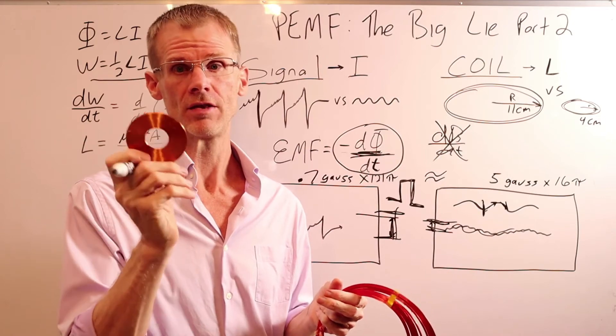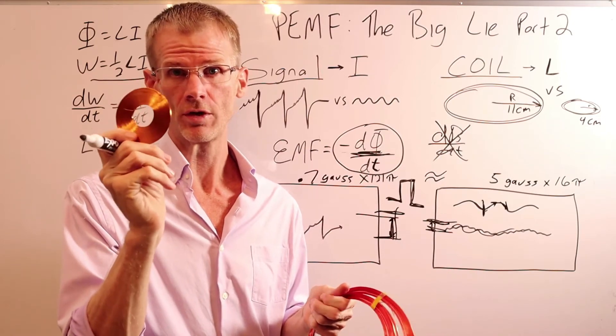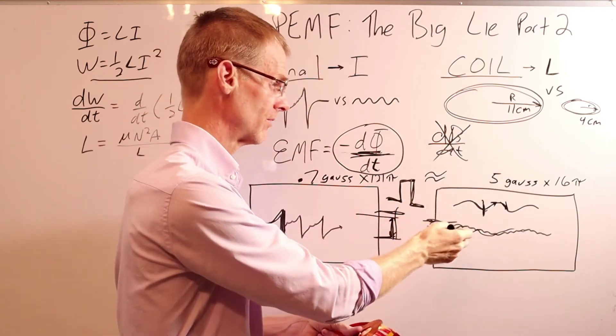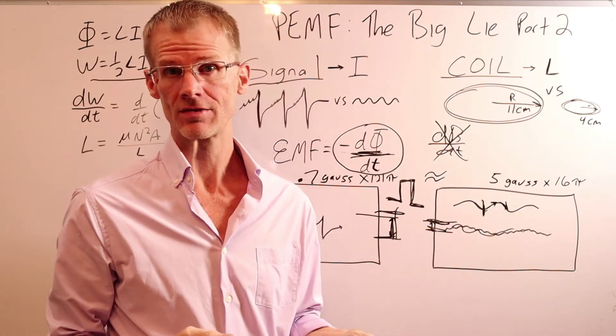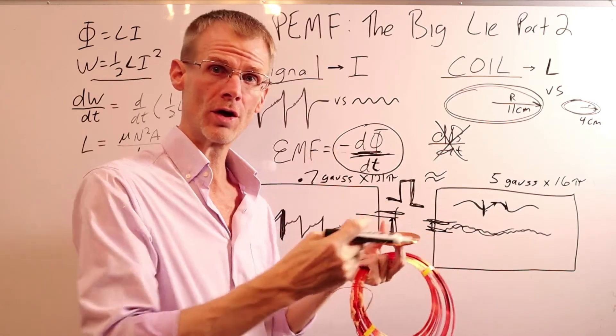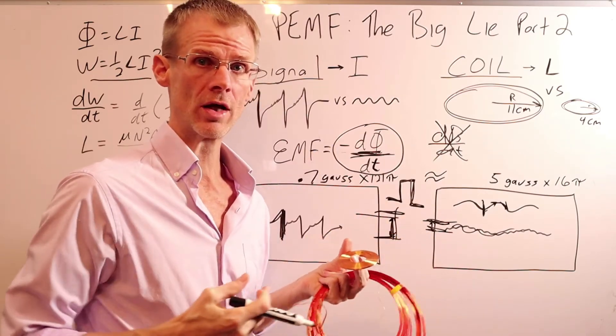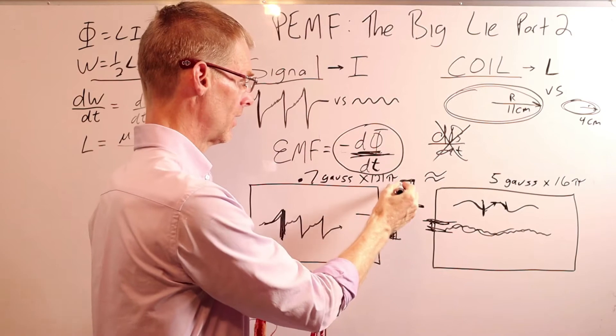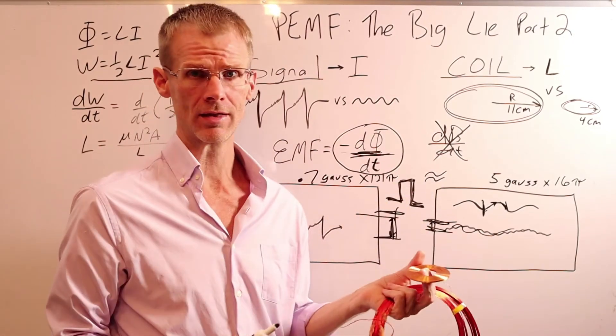But the problem with the BioBalance, even though it's got several of these coils, is it's using the slow rise and fall and kind of just a simple modulated sine wave. And that's just not inducing enough current in the tissues to really create true healing. Again, you need that rapid rise and fall, and you're not going to get that in the sine wave.